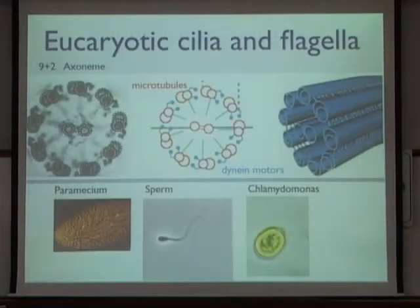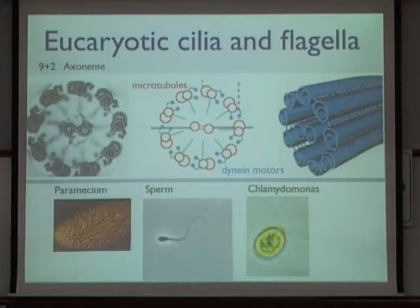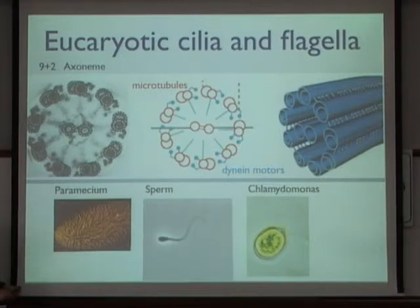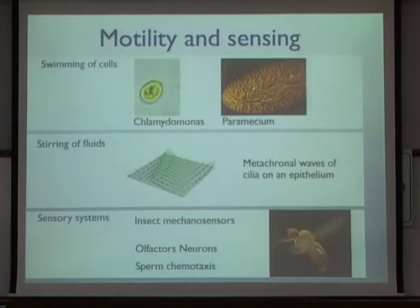In the last part of my talk I want to return to flagella — a beautiful example of how many dynein motors together generate complex spatio-temporal dynamics. These axonemal structures are very conserved and common in eukaryotic cells, existing in single-cell organisms such as Paramecium and Chlamydomonas, as well as in higher organisms where they are responsible for the propulsion of many sperm. They can generate swimming of cells but also stir fluids.